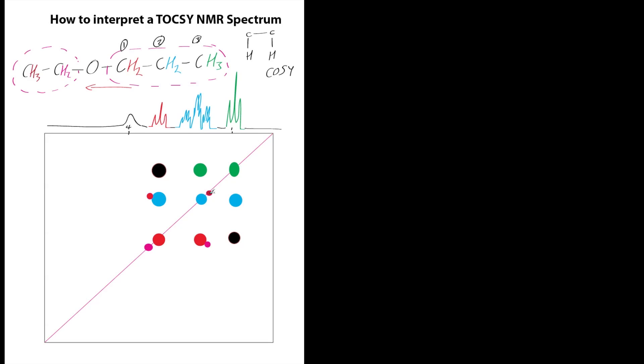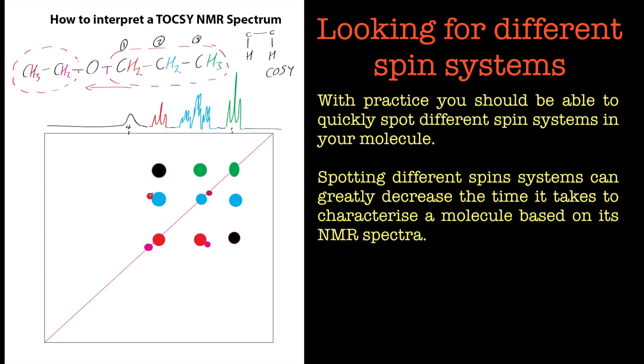You look at this proton and you can see we've only got that one spin system there. If there are other hydrogens attached or a cyclic or something like that then they would show up here as well on this line. Okay, so it's very very easy to see different spin systems using the TOCSY spectrum.